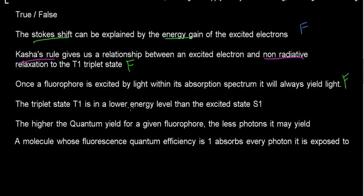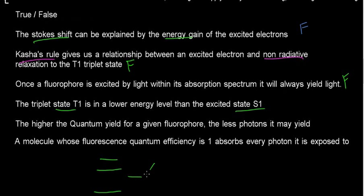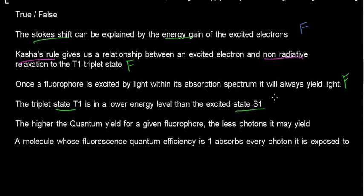The triplet state T1 is in a lower energy state than the excited state S1. This is a pretty simple comparison. If you remember the Jablonski diagram, it shows the T1 state and the S1 state, and yes — T1 is actually in a slightly lower energy state. So this statement is correct — true.